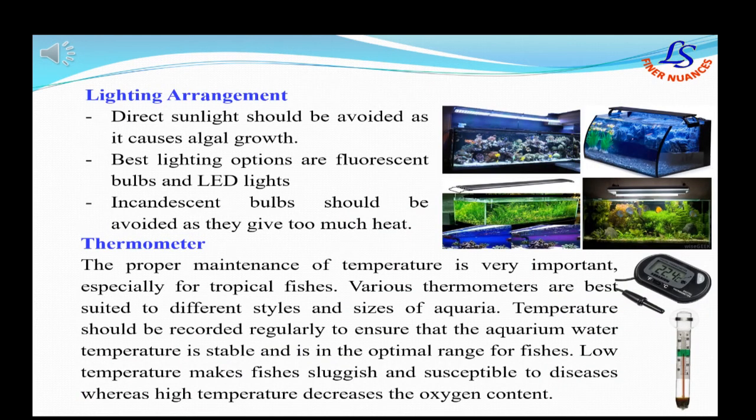Lighting arrangement for an aquarium is a very important factor. Direct sunlight should always be avoided. Best lighting options are fluorescent bulbs and LED lights. A thermometer is also very important because it helps to maintain the temperature, especially for tropical fishes. Temperature should be regulated according to the needs of the fishes, as low temperature makes fishes sluggish and susceptible to diseases.